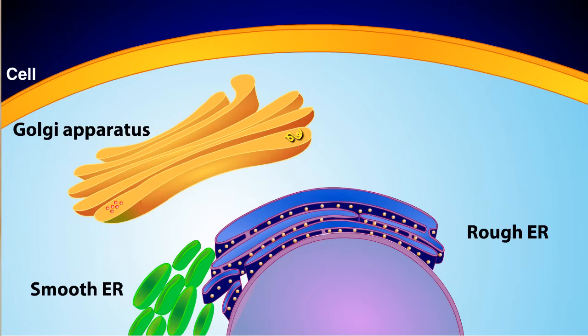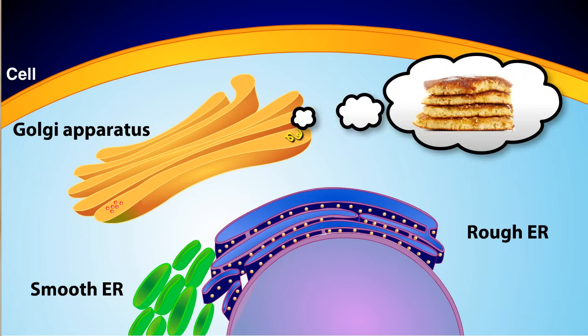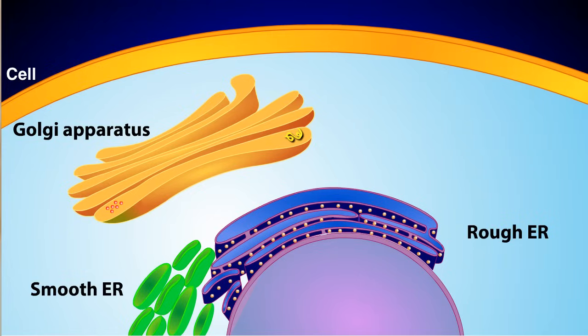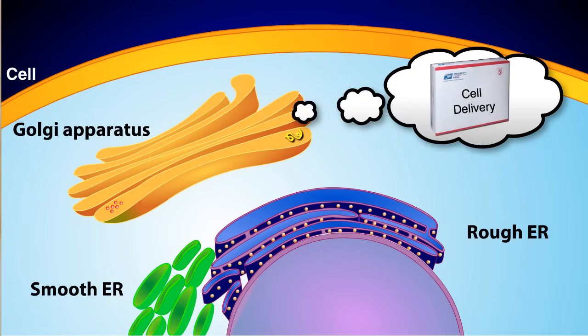The Golgi apparatus is made of a series of flattened sacs that look a little like pancakes. Its job is to package and distribute cell products that are either destined for a specific location within the cell, such as the plasma membrane, or for secretion from the cell. You can think of the Golgi apparatus as the post office of the cell, where packages are dropped off and destinations are assigned.